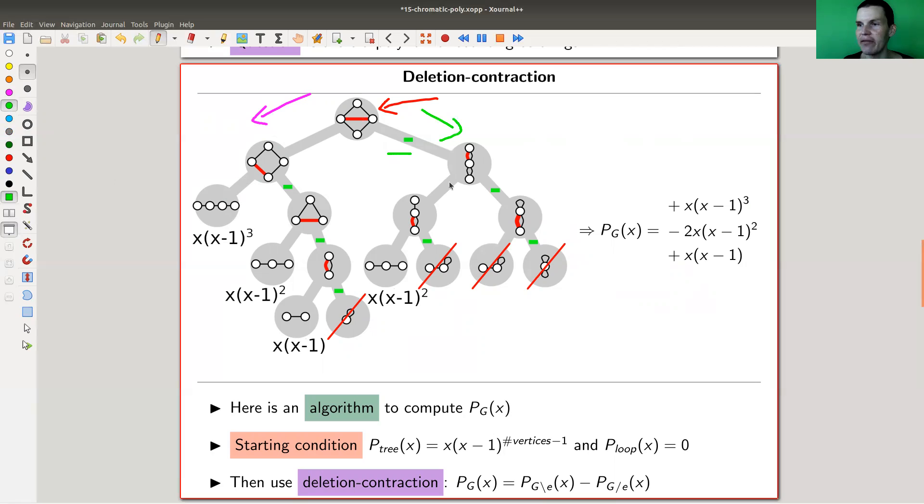and you put a little sign whenever you contract. So that's why I have those little signs here. And you continue, just choose the next edge, choose the next edge, choose the next edge, until you're down to line graphs or something with a circle.